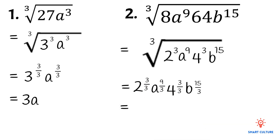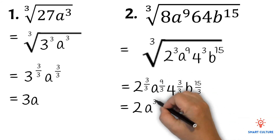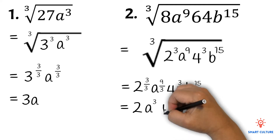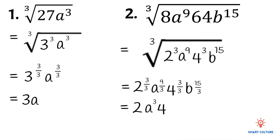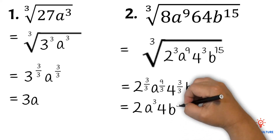For a: 9 divided by 3 equals 3, so a will have an exponent of 3. For the 4: 3 divided by 3 equals 1, so 4 has no written exponent — it has an exponent of 1 but we don't write it. For b: 15 divided by 3 equals 5, so in the final answer b will have an exponent of 5.